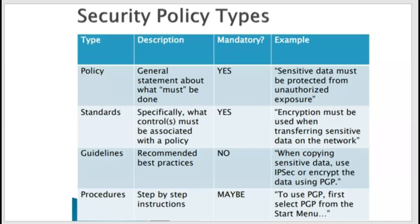Standards govern the acceptable level of security for software and hardware. Guidelines would be next — these are recommended, and we use them when standards are not available or not as clear as we'd like. Then there are procedures, sometimes called standard operating procedures or SOPs. Procedures are the lowest level of an information security program — these are step-by-step detailed instructions for how security policy is implemented, and they make policy repeatable.